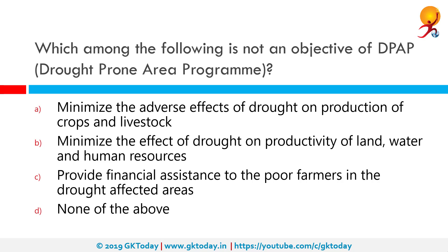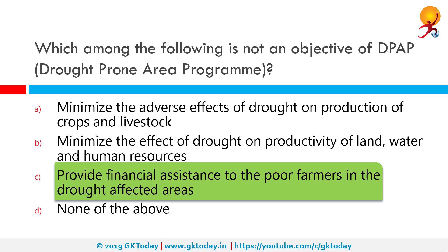Which among the following is not an objective of DPAP or Drought-Prone Area Program? The Drought-Prone Area Program (DPAP) is the earliest area development program, launched by the central government in 1973-74 to tackle the special problems faced by fragile areas constantly affected by severe drought conditions. The only option which is not an objective is to provide financial assistance to the poor farmers in the drought affected areas.